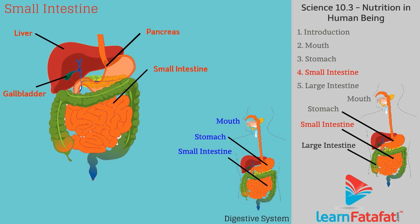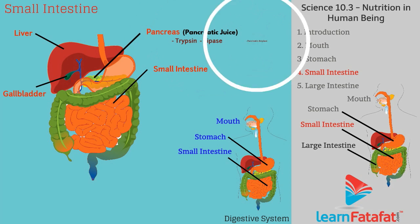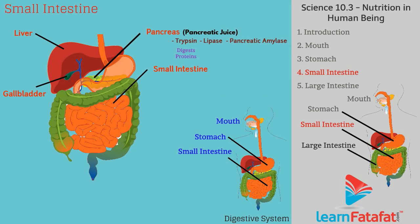The pancreas secretes pancreatic juice consisting of enzymes trypsin, lipase, and pancreatic amylase. Trypsin digests proteins, lipase breaks down fats, and pancreatic amylase digests carbohydrates. Bile and pancreatic juice enter the small intestine through a common duct.